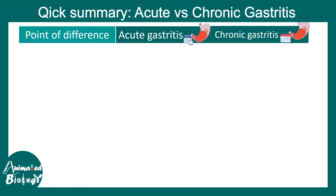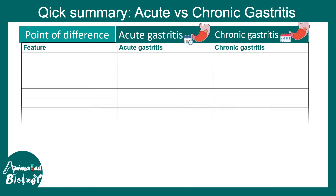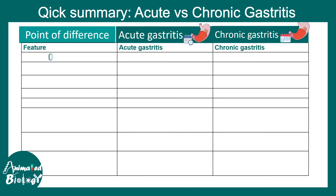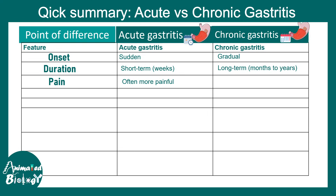Let's review the key differences between acute and chronic gastritis. Onset: acute is sudden, chronic is gradual and prolonged. Duration: acute is short-term, chronic is long-term. Pain: acute gastritis is mostly very painful, while chronic gastritis is less painful but characterized by an intermittent, persistent, and more irritating long-term pain state.